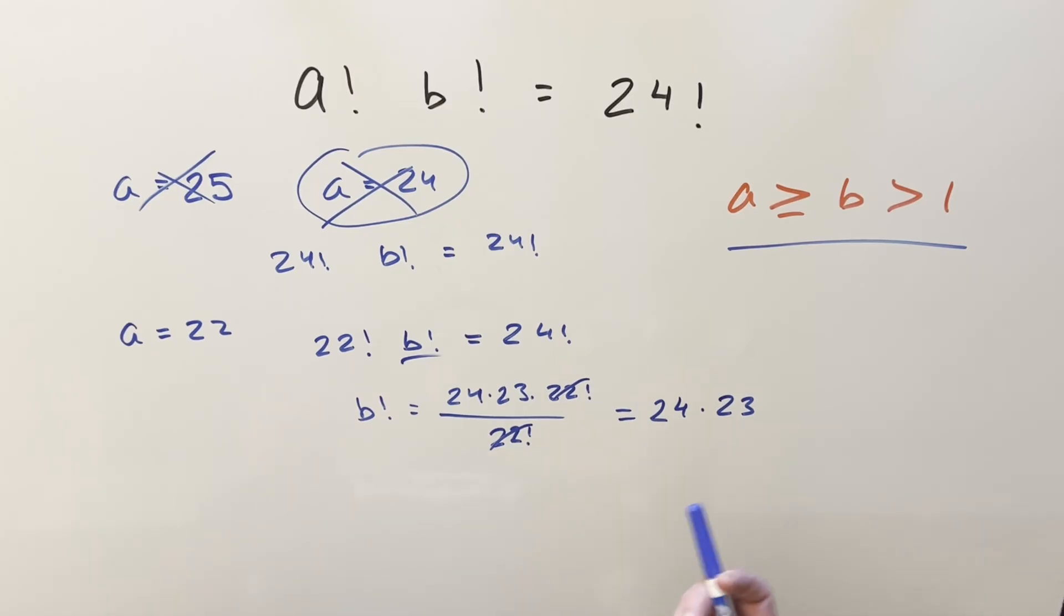The thing with factorials that we use again, it's this prime factorization. If we kind of expand out b factorial, it's just b times b minus 1 times b minus 2 all the way down to 1. But then when you expand it out, you're going to have some primes in here unless of course you were like at 1 factorial. As long as you're at 2 or greater, you're going to have primes in this expansion.